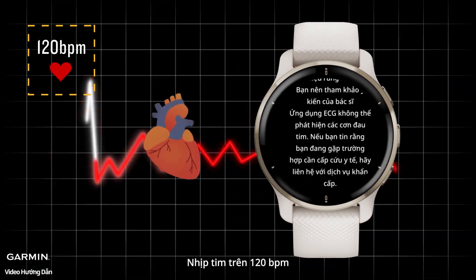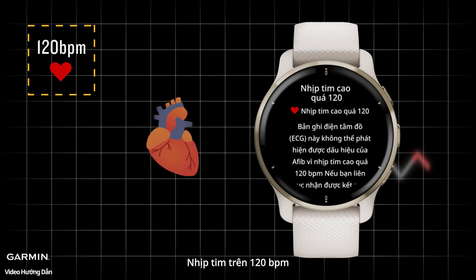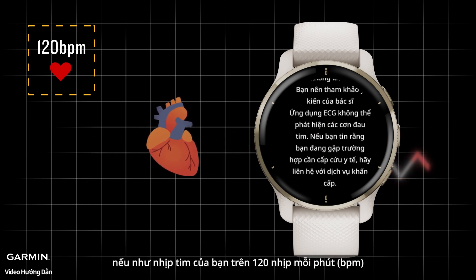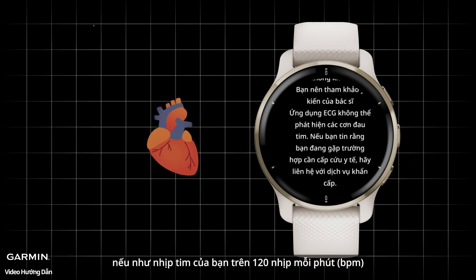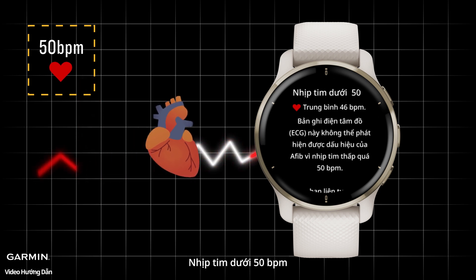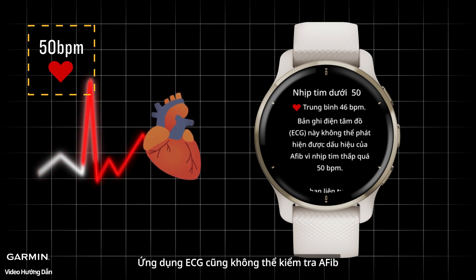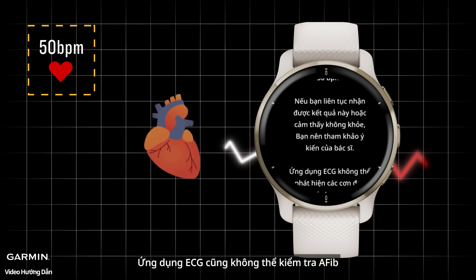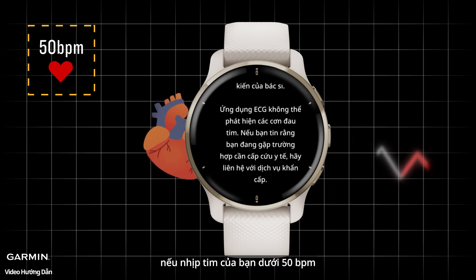Heart rate above 120 beats per minute: if your heart rate is above 120 beats per minute, the ECG app cannot check for AFib. Heart rate below 50 beats per minute: if your heart rate is below 50 beats per minute, the ECG app cannot check for AFib either.